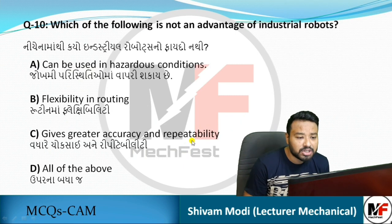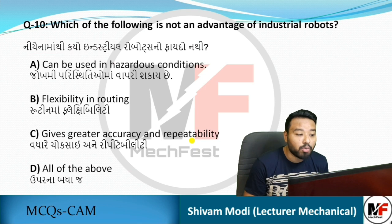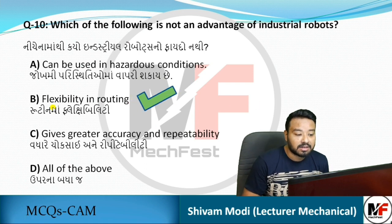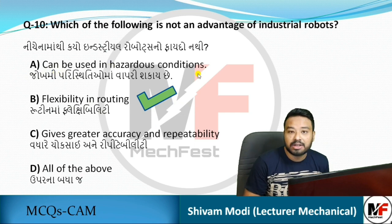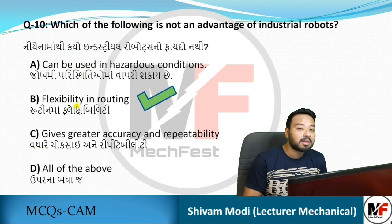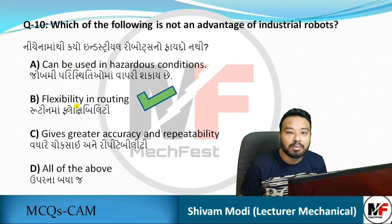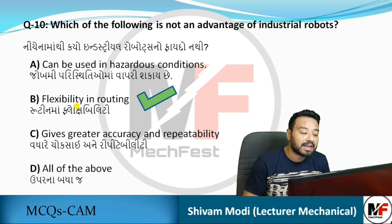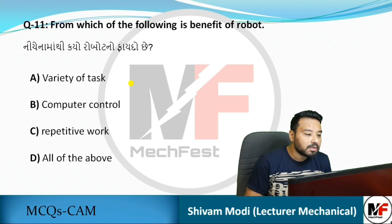Next question: which of the following is NOT an advantage of industrial robots? Options include flexibility in routing, ability to work in hazardous conditions, higher accuracy and repeatability. Flexibility is not an advantage — a robot is programmed for one specific task and once programmed, it performs the same operation repeatedly; it cannot change on its own. So the answer is flexibility.